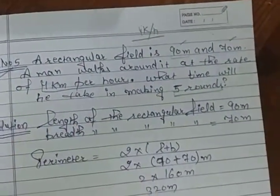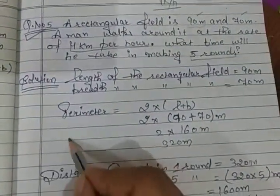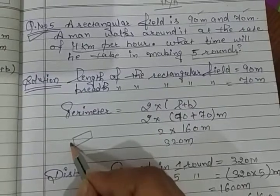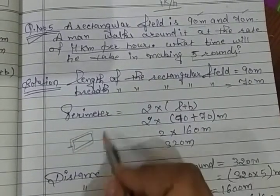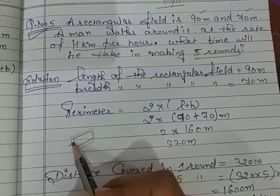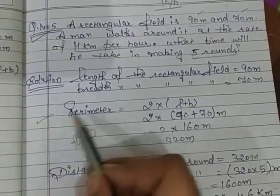First of all we have to solve its perimeter, because if he walks around it, that is a rectangular field, so he will reach the same point. In this condition we have to find perimeter first.